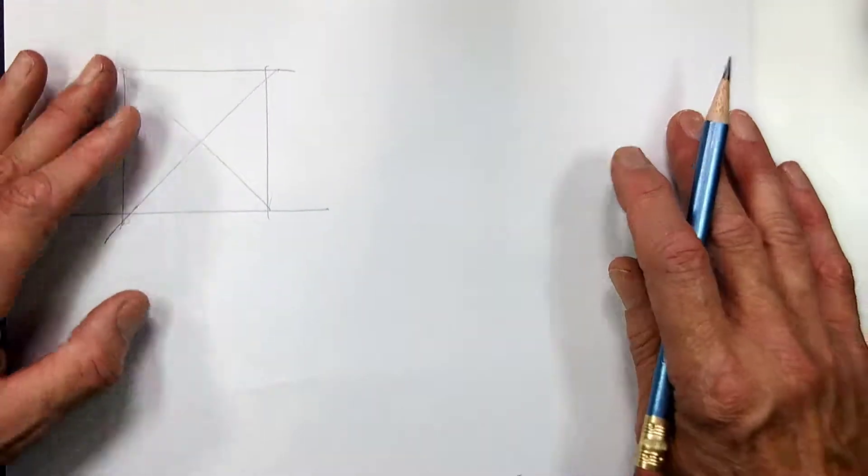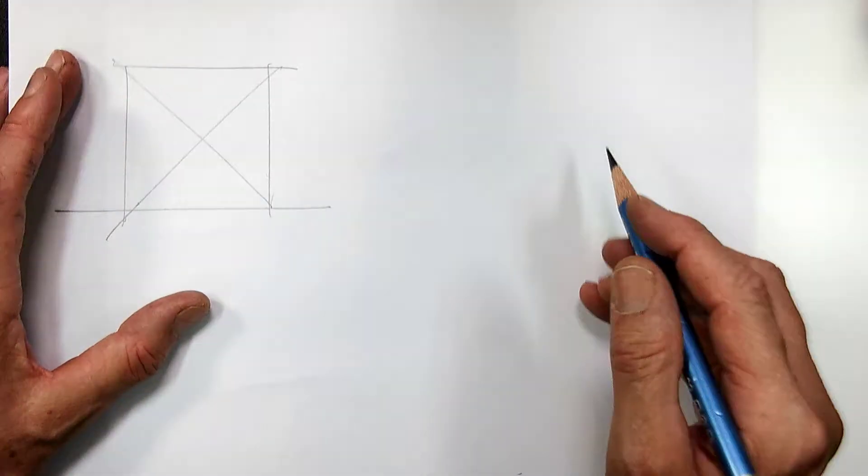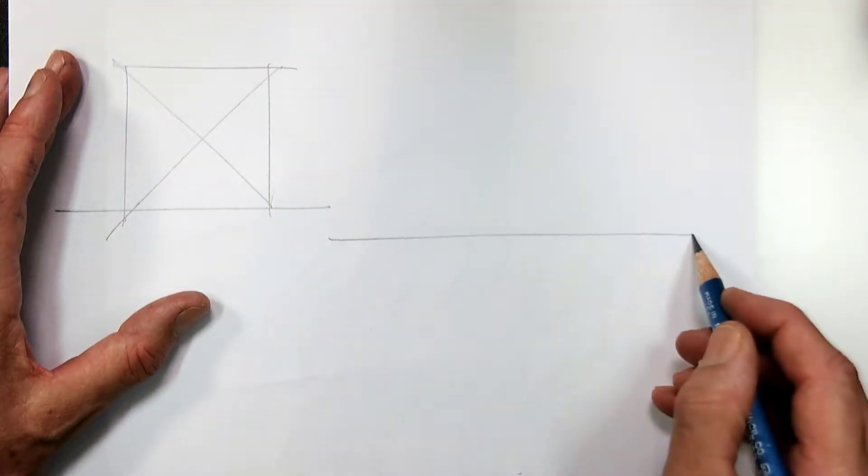But to do a plan oblique you need to rotate the square. So here's how you do it.